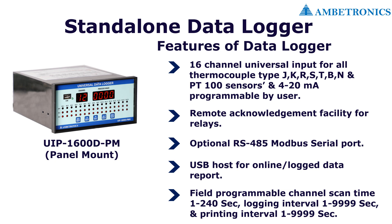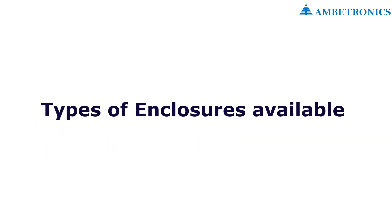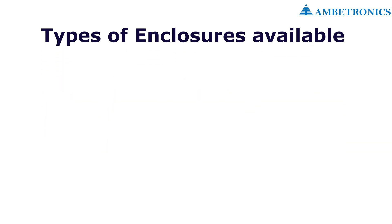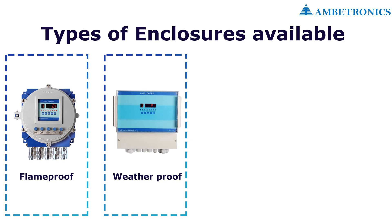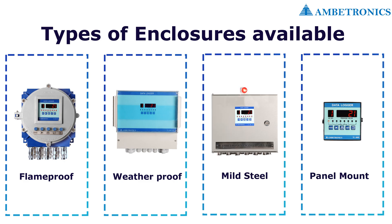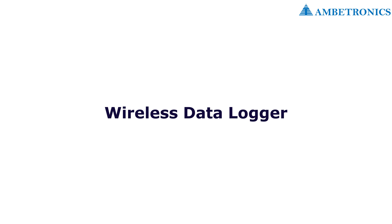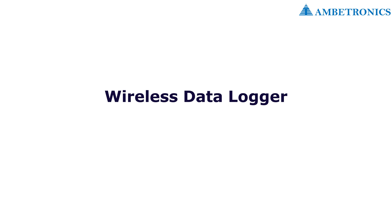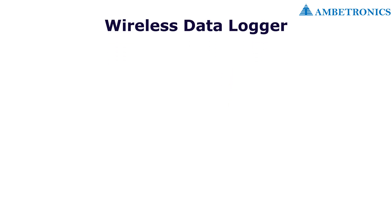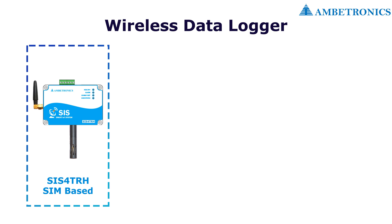The field-programmable channel scan time is 1 to 240 seconds, logging interval is 1 to 9999 seconds, and printing interval is 1 to 9999 seconds. Enclosures are available in four types: flame proof, weatherproof, mild steel, and panel mount.